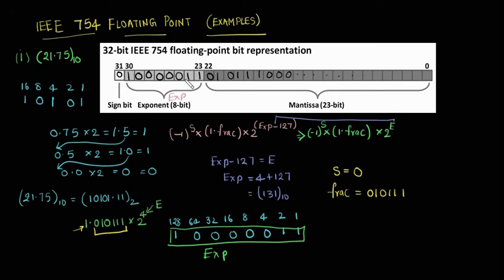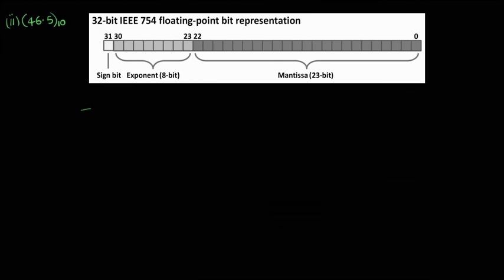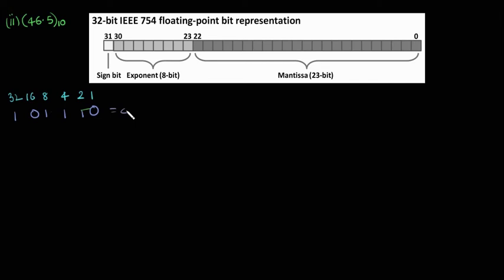Now let us consider one more example — converting 46.5 decimal into floating-point. First convert 46 into binary using weights 1, 2, 4, 8, 16, 32. We write a 1 at the 32 position. 46 minus 32 is 14. We need 8, 4, and 2, which equals 14. The remaining bits are zeros. So 46 base 10 equals 101110 base 2.